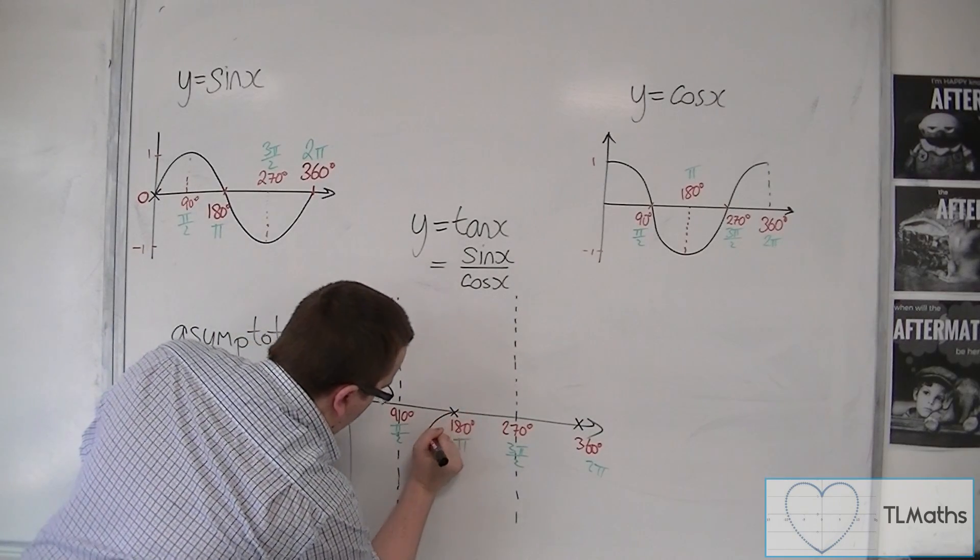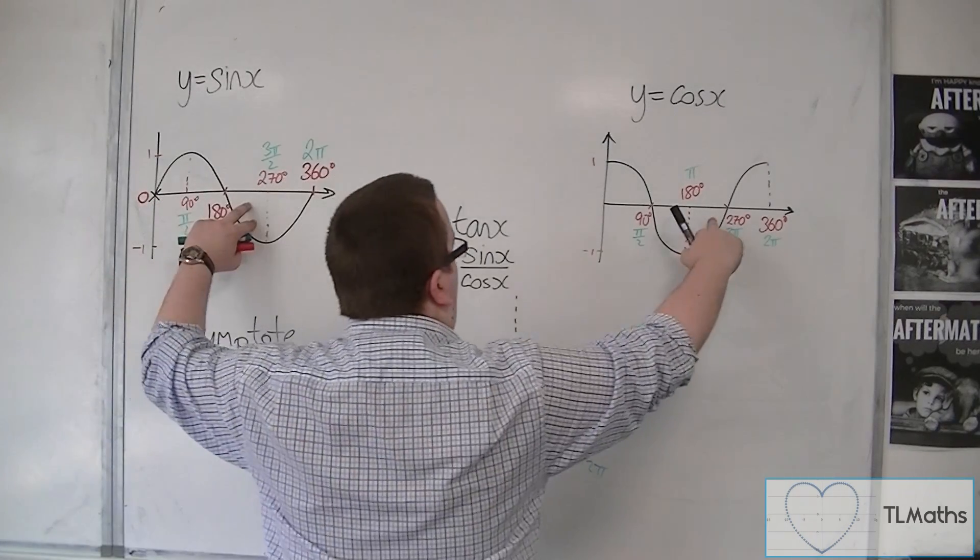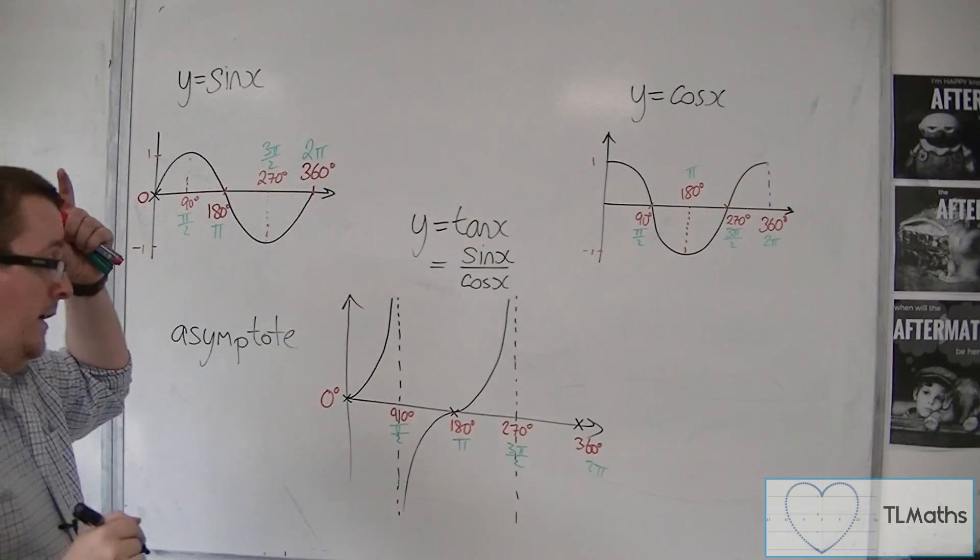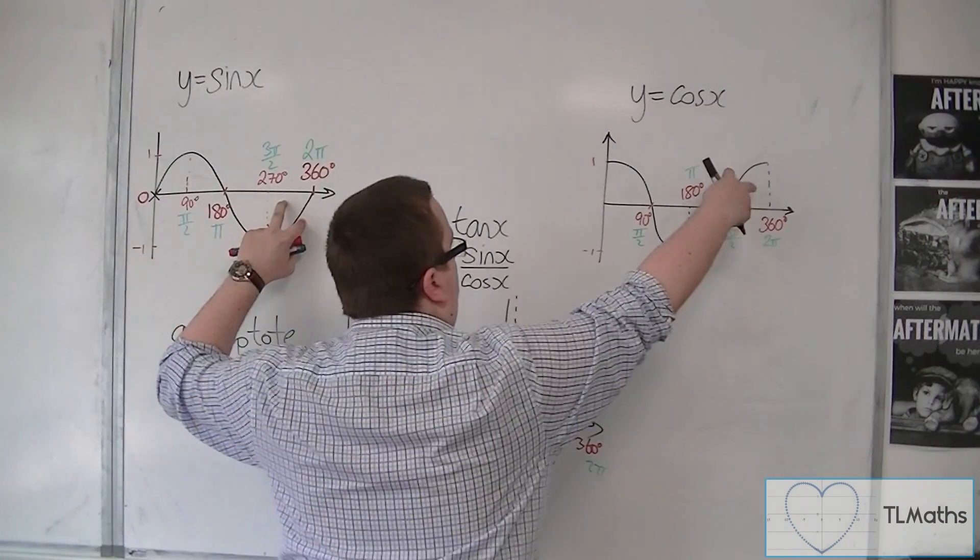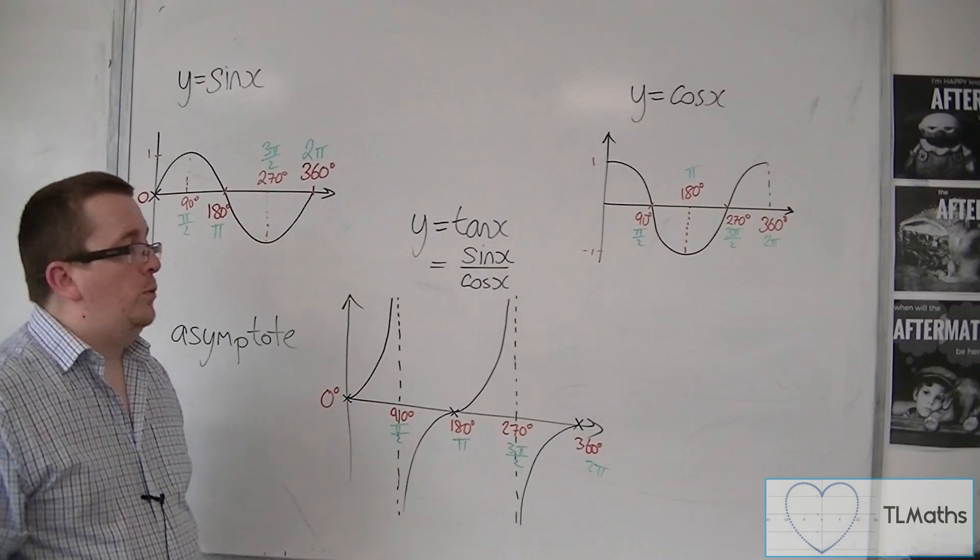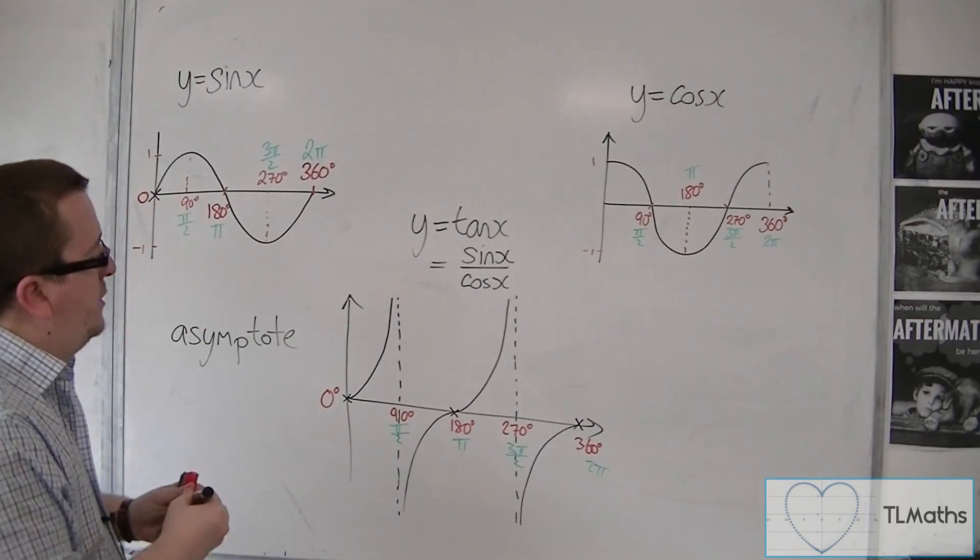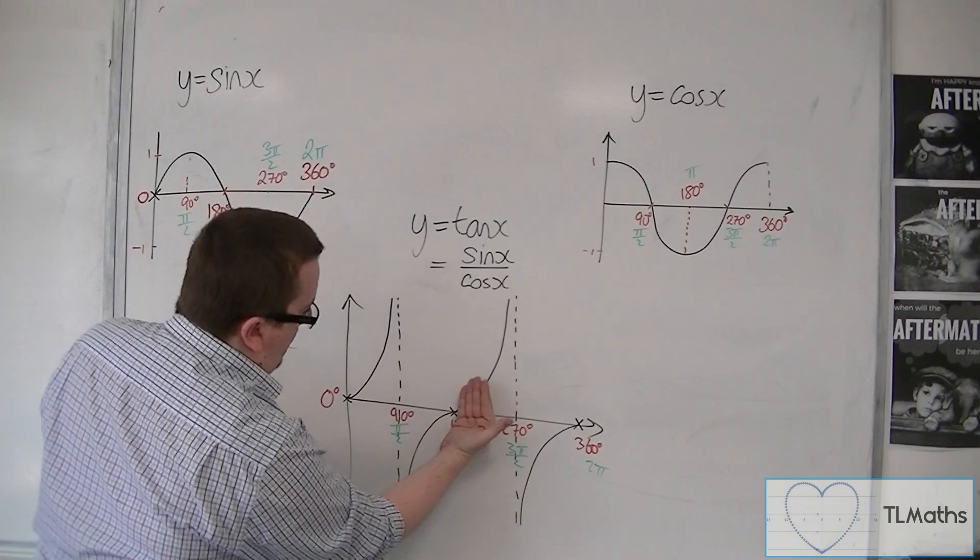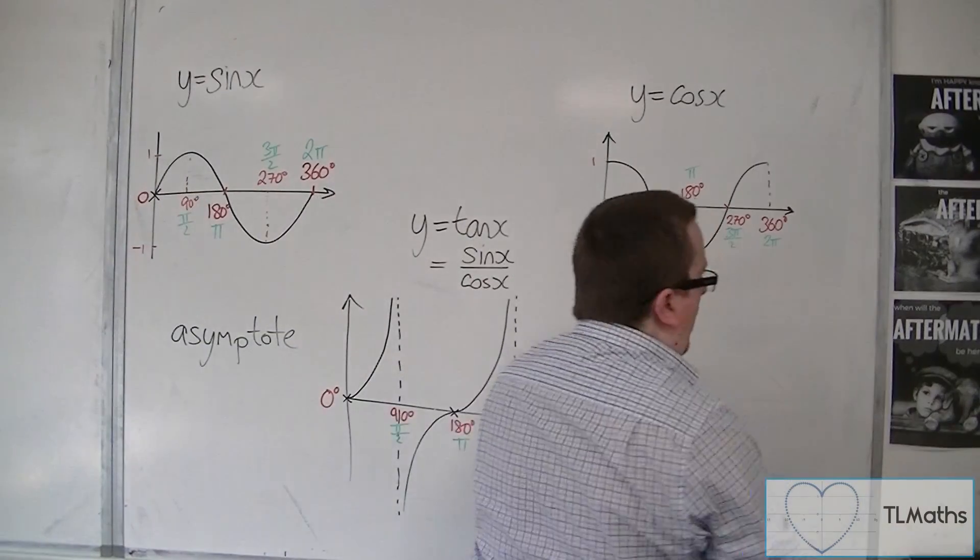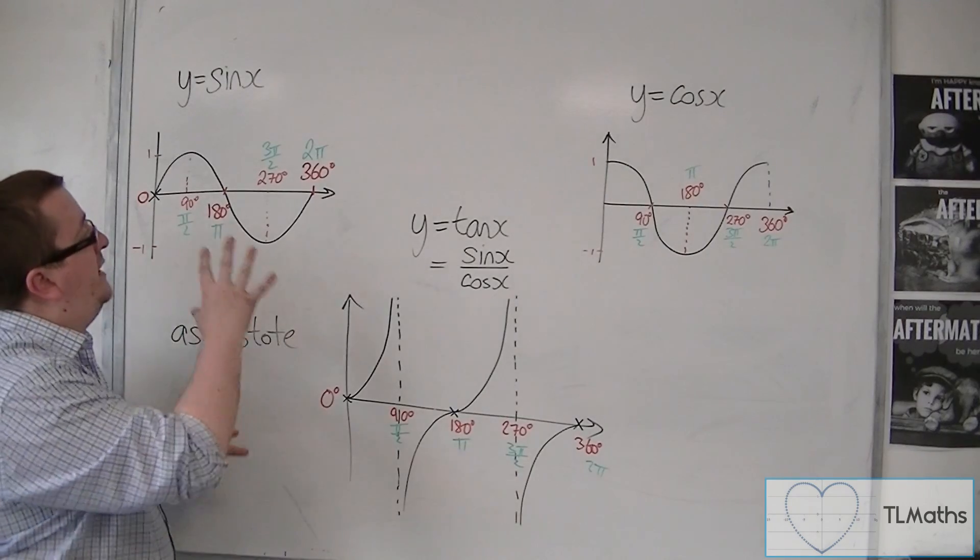Between 180 and 270, we have negative over negative, so that's positive, so the curve must be in the positive region. Between 270 and 360, we have negative divided by positive, which is negative. This is y equals tan x between 0 and 360 degrees, or 0 and 2π. The curve repeats itself after every one of those segments, and it will continue repeating itself over and over again in both directions, just like sine and cosine do.